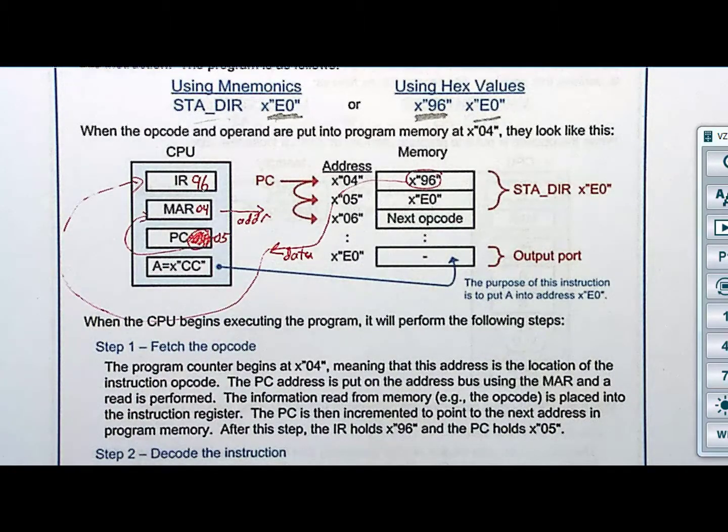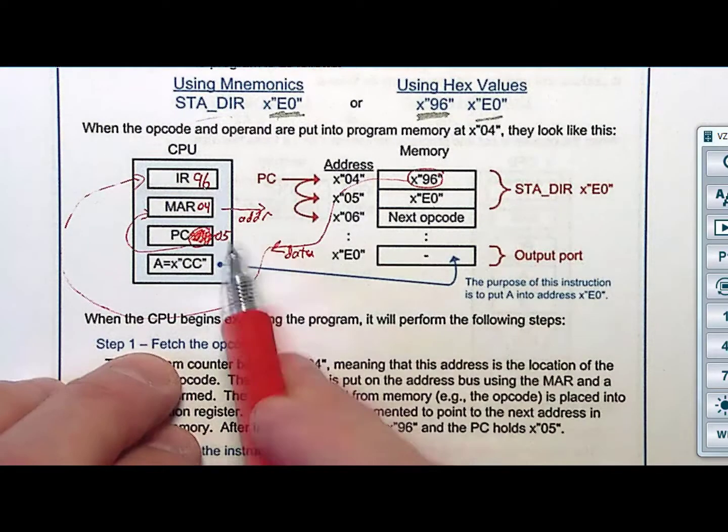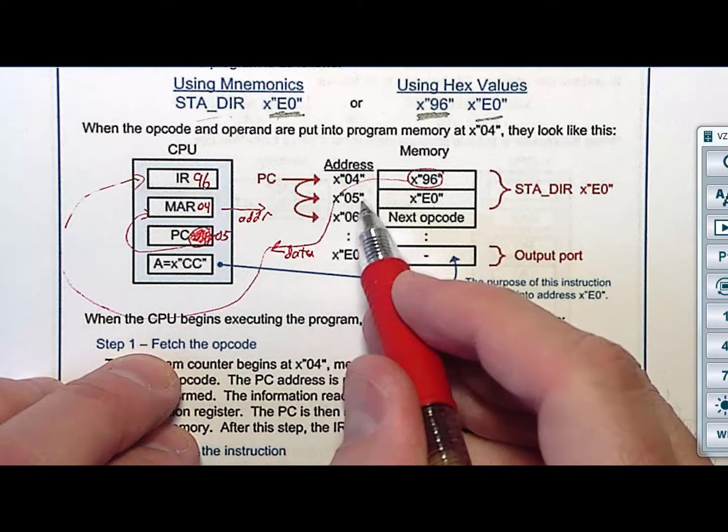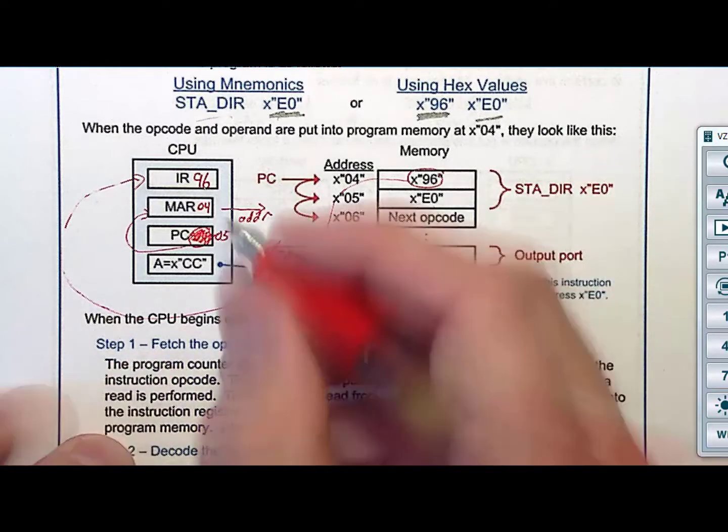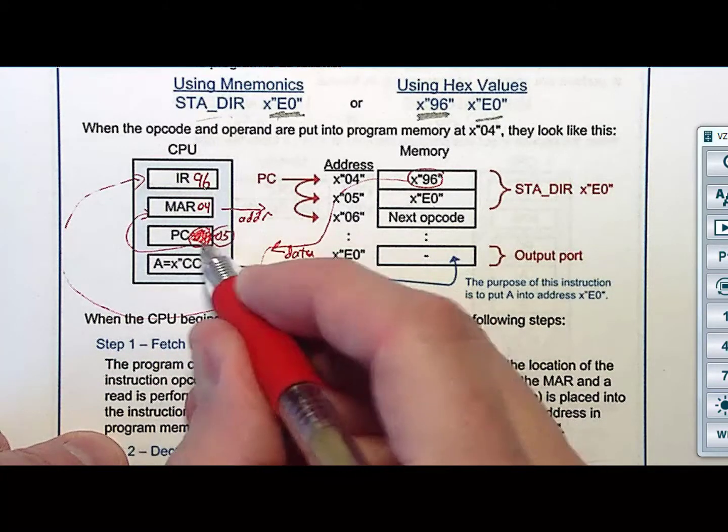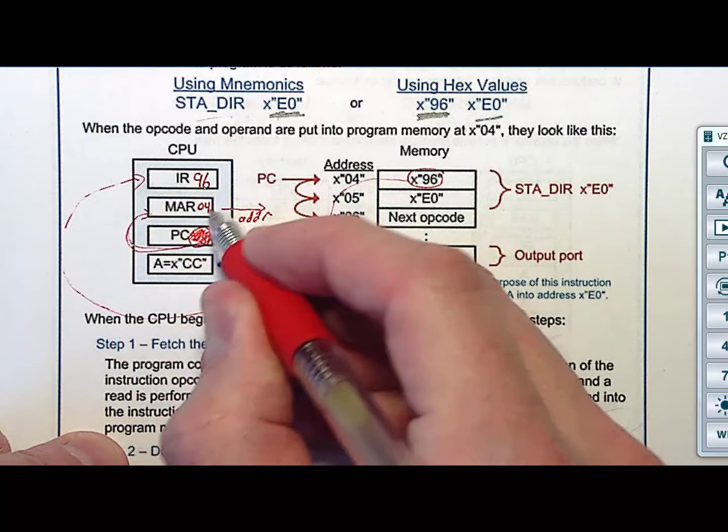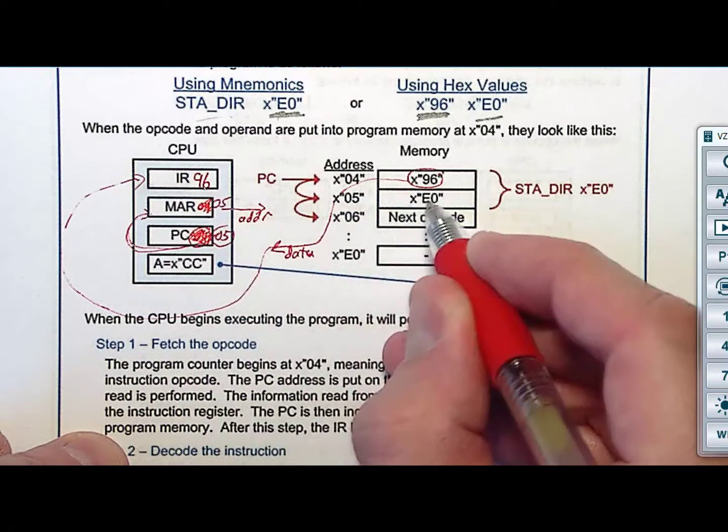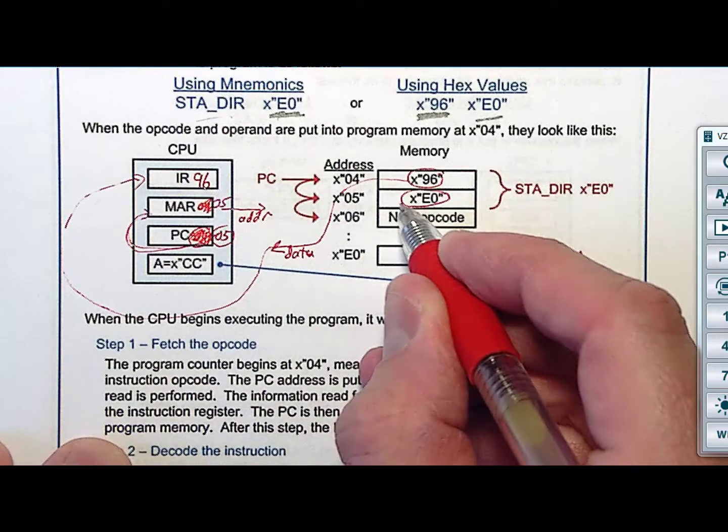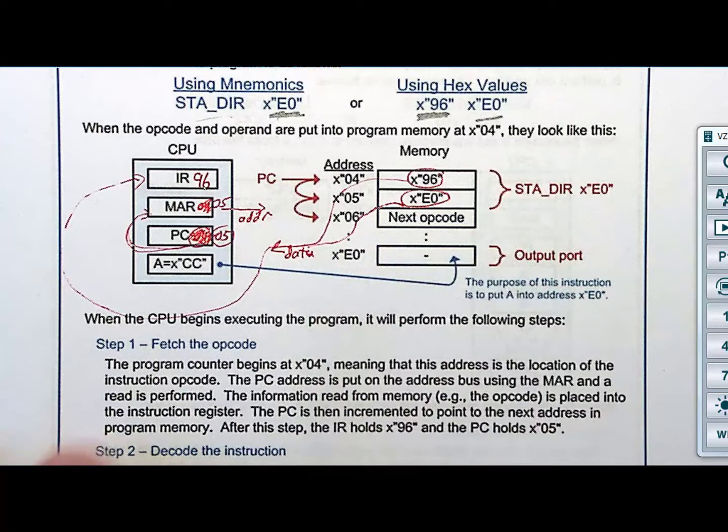96 tells me a whole pile. It tells me this is a store from A into memory. What I'm going to do is I'm going to go read from 05. Who holds 05? How do I know what address? It's in the program counter. I'm going to take program counter and I'm going to stuff it into the memory address register, which now provides the address 05. Here comes E0. E0 is now on the data bus. It is the address of where I am going to go write to. What should I do with E0? It's an address. Put it into MAR.